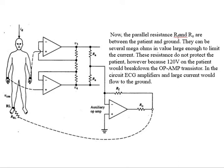The parallel resistances R1 and R0 are between the patient and ground, with values of several megaohms — large enough to limit the current. As mentioned, if there is a very high resistance, the current flow through that resistance is kept under control, very low or minimum. If this is the case, then we can pick the signals at both arms.